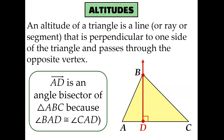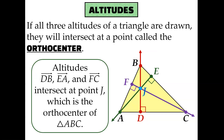Altitudes are not perpendicular bisectors because they don't bisect one of the sides. The other defining property of an altitude, in addition to being perpendicular, is that it must pass through the vertex on the opposite side of the triangle. Just like perpendicular bisectors and angle bisectors, if you draw all three altitudes in a triangle they are concurrent — they all intersect at the same point, and that point is called the orthocenter.